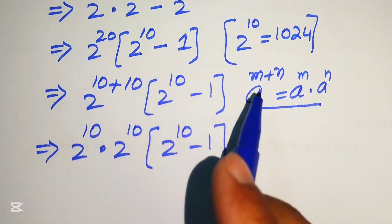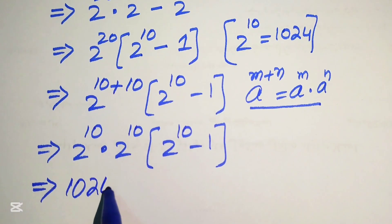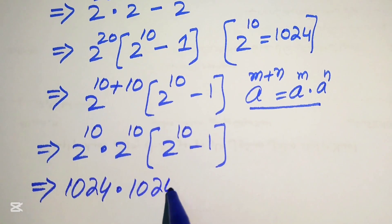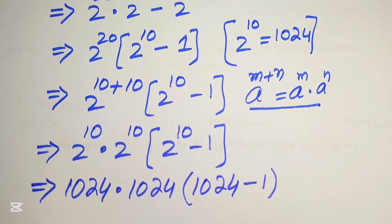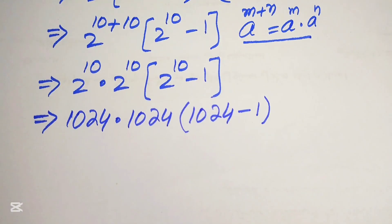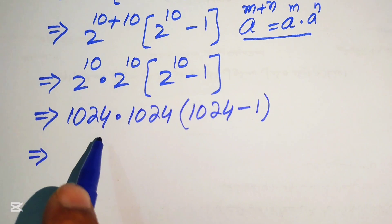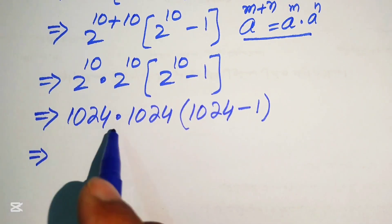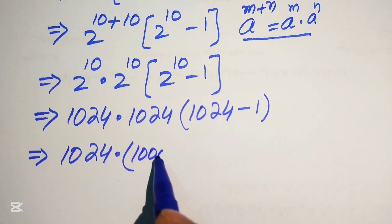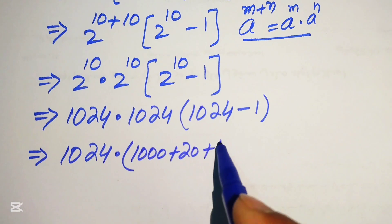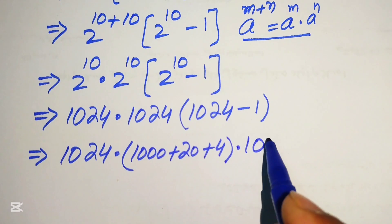We replace 2 to the power of 10 with 1024 throughout. This gives us 1024 multiplied by 1024, multiplied by (1024 minus 1). We then break 1024 as 1000 plus 20 plus 4, and note that 1024 minus 1 equals 1023.